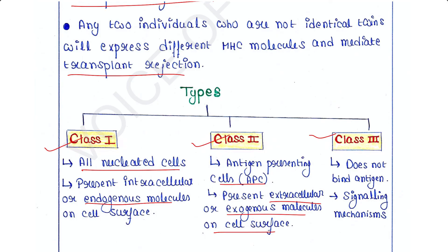Unlike MHC class 1 and class 2, class 3 MHC molecules do not participate in antigen binding. Instead, they are involved in some kinds of signaling mechanisms.